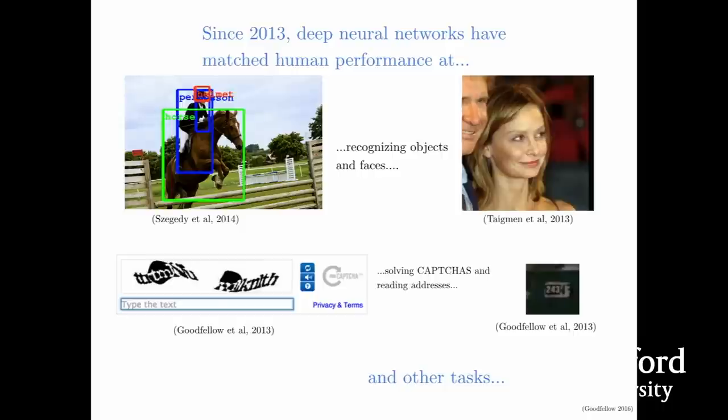Looking at the big picture and the context for this lecture, I think most of you are probably here because you've heard how incredibly powerful and successful machine learning is—that very many different tasks that could not be solved with software before are now solvable, thanks to deep learning, convolutional networks, and gradient descent. All of these technologies are working really well.